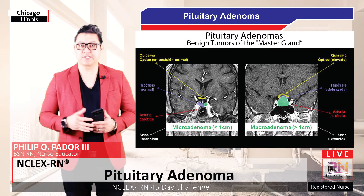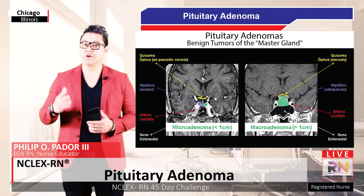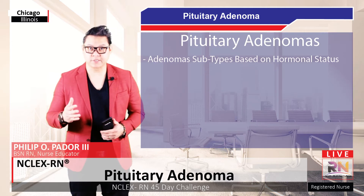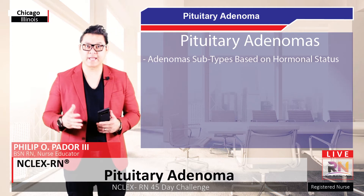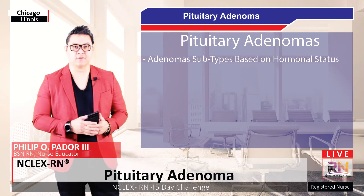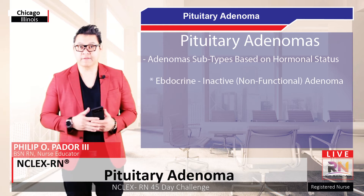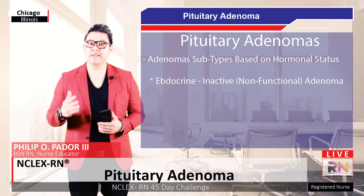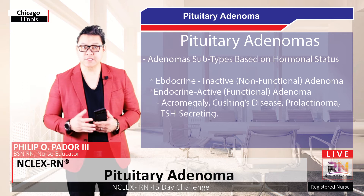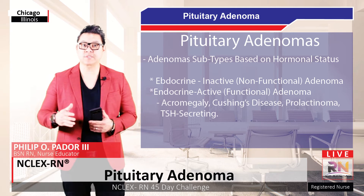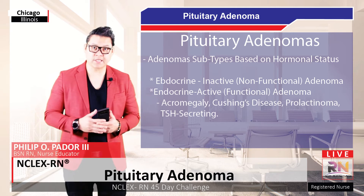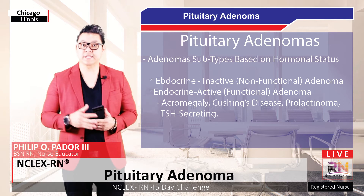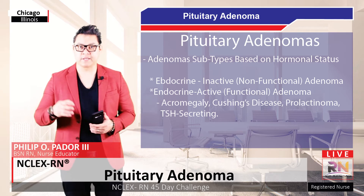The pituitary gland is shaded in green and the adenoma in yellow. Note the compression of the normal gland from the large macro adenoma. Endocrine inactive tumors produce no hormones, while endocrine active tumors produce hormones including those associated with acromegaly, Cushing's disease, prolactin, and thyroid-stimulating hormones.